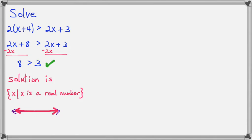Now, the graph, if you had to graph it, would be the entire number line because we need to shade all the numbers. And the interval notation would be negative infinity to positive infinity.